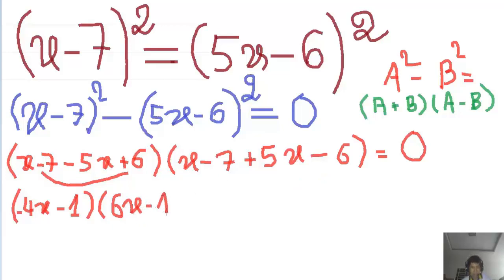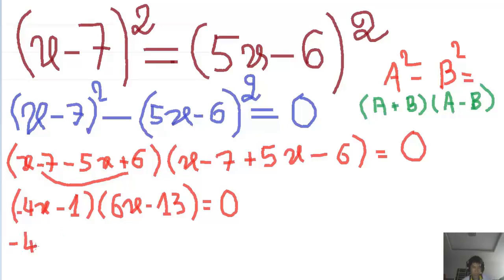So here, equal to 0. Yes, and continue: minus 4x, yes, minus 4x, minus 4x. Minus 1, minus 1, minus 1, equal to 0.